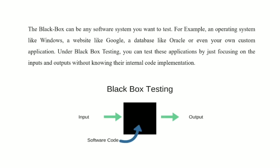The black box can be any software system you want to test. For example, an operating system like Windows, a website like Google, a database like Oracle, or even your own custom application. Under black box testing, you can test these applications by just focusing on the inputs and outputs without knowing their internal code implementation.